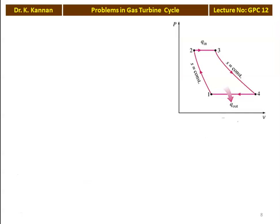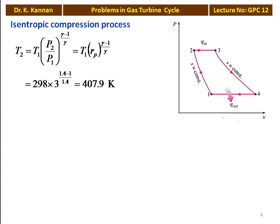From the P-V diagram: 1→2 isentropic compression, 2→3 constant pressure heat addition, 3→4 isentropic expansion, 4→1 constant pressure heat removal. For isentropic compression: T2 = T1 × Rp^((γ-1)/γ) = 298 × 3^(0.4/1.4) = 407.9 K.